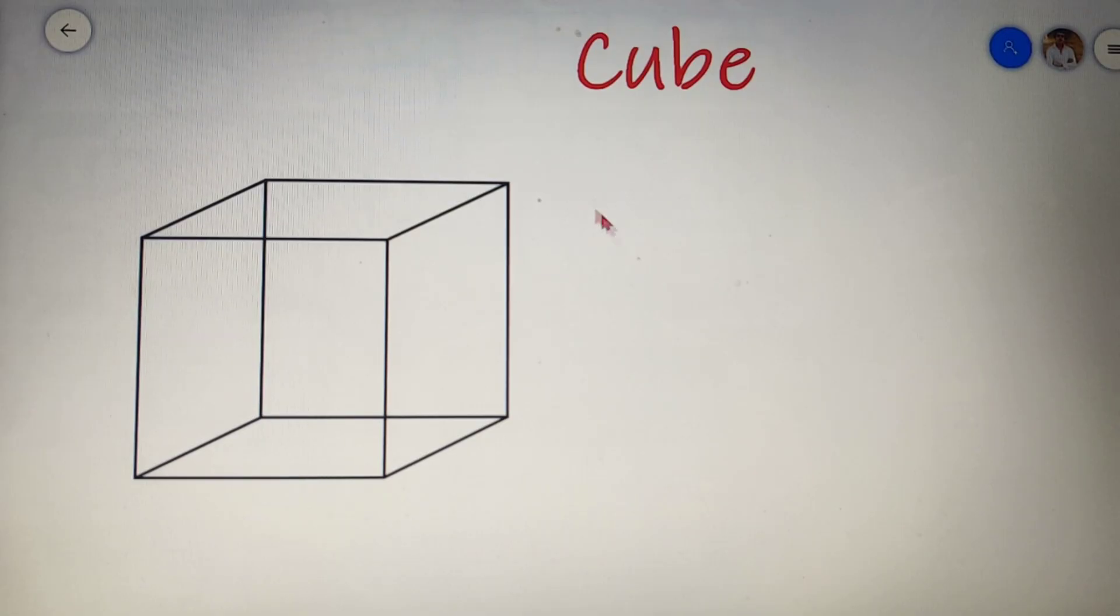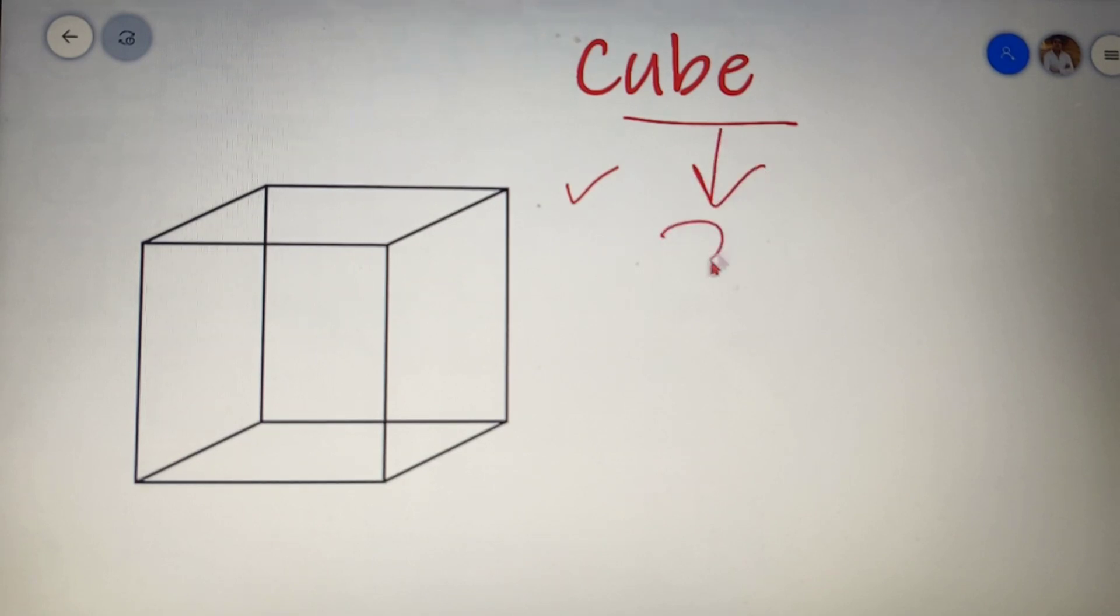Now the shape that we have over here is a cube. A cube is one of the simplest three-dimensional figures. If you don't know what 3D figures are, let me explain it to you briefly. If a figure requires a length, a breadth, and a height to describe its properties, then that figure is called a 3D figure.